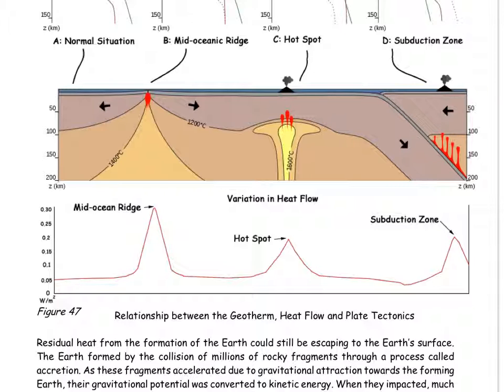So in answer to why does the heat flow vary across the Earth's surface, it all depends on plate tectonics. For example, where the two plates pull apart, the hot interior of the Earth is nearer the surface, which brings more heat to the surface.